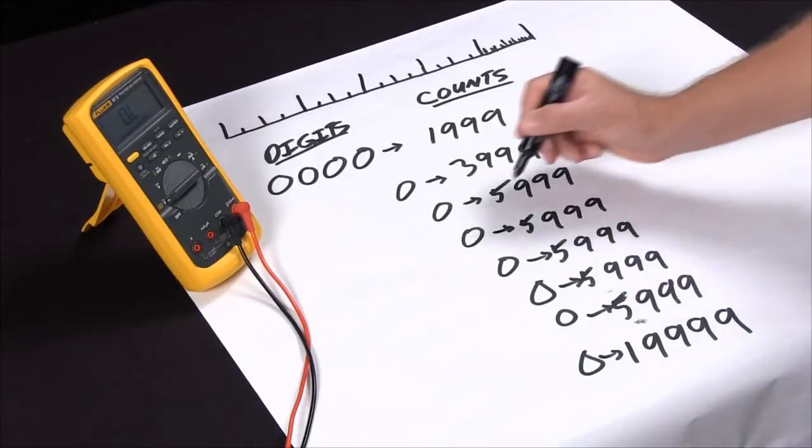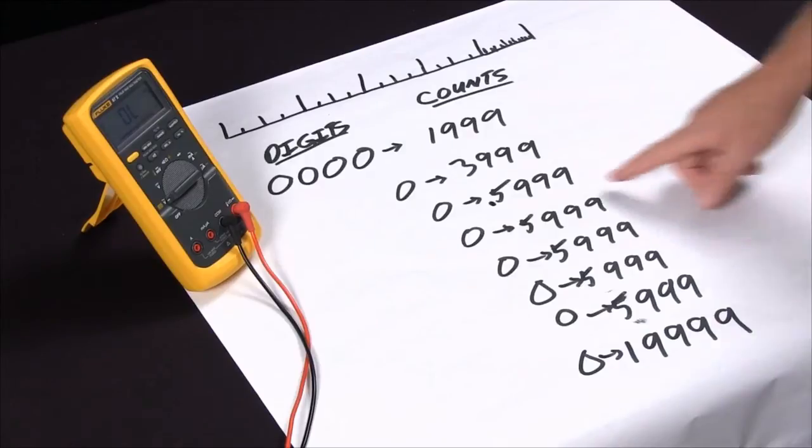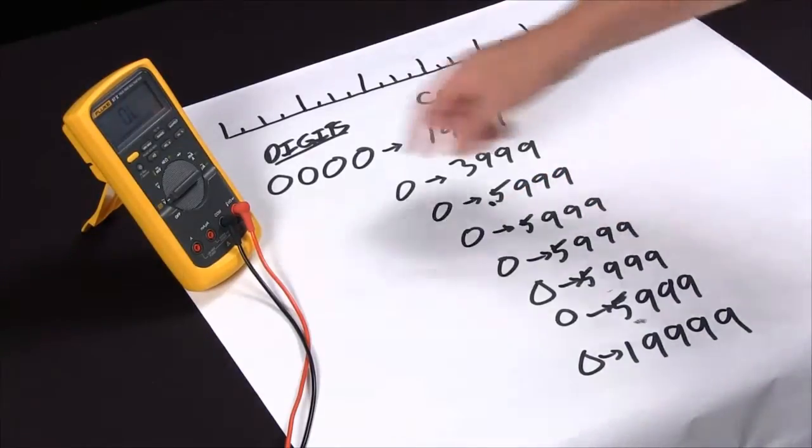But if we look at where my decimal place went, we're now in the 600 millivolt range. My resolution goes all the way down to four places beyond the decimal place.